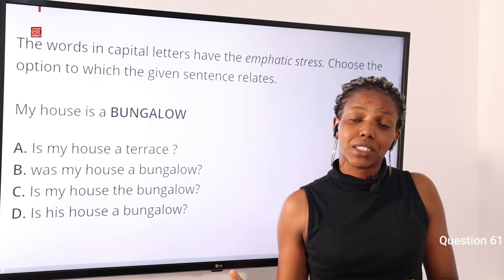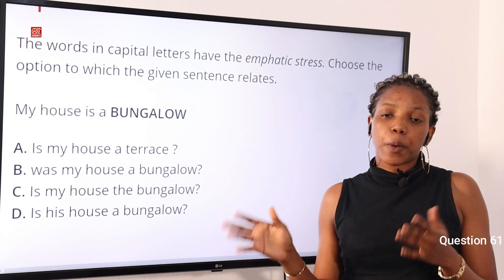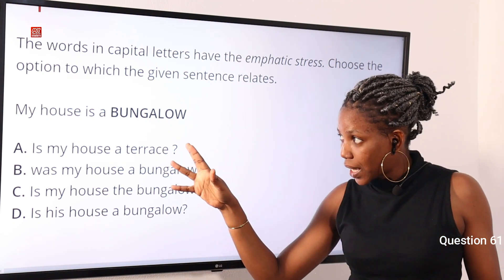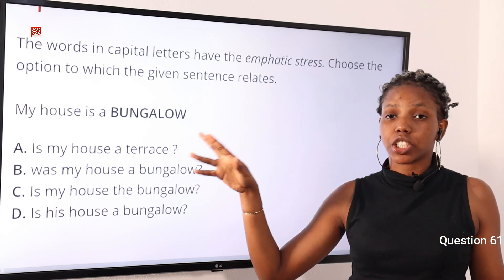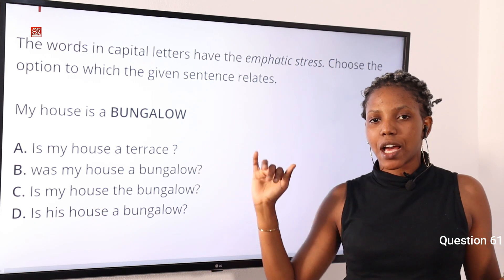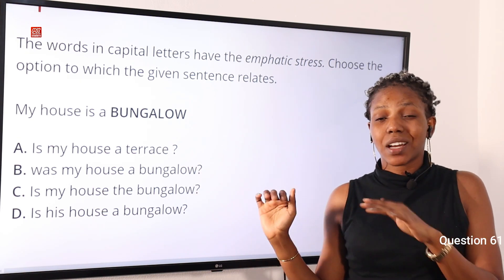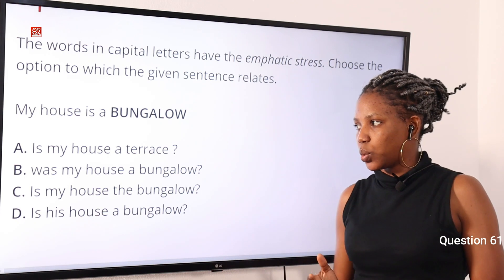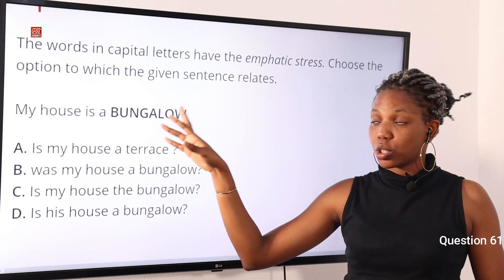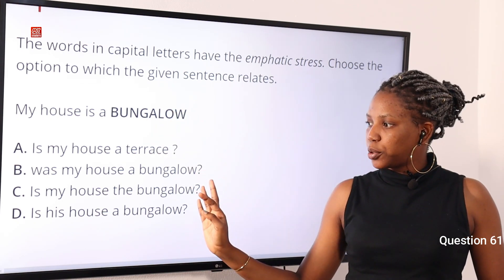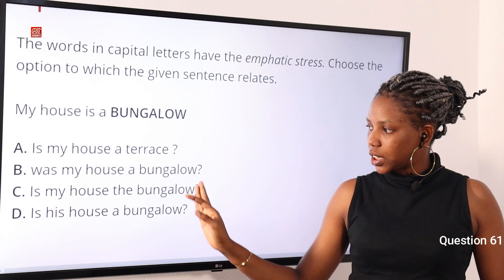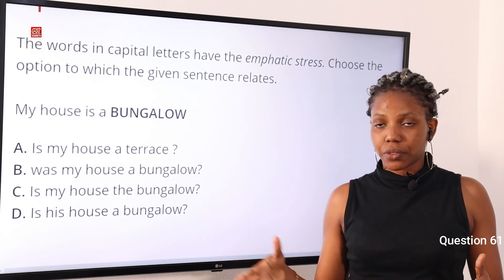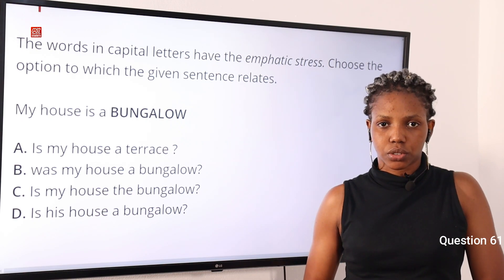Do not forget that with emphatic stress, the options are usually in question form and the word emphasized is usually changed. The option should have a word that is quite different from what has been emphasized. So we have 'terrace' and the word in the sentence is 'bungalow.' Unlike options B, C, and D, which still have the word bungalow. So option A is the correct answer.